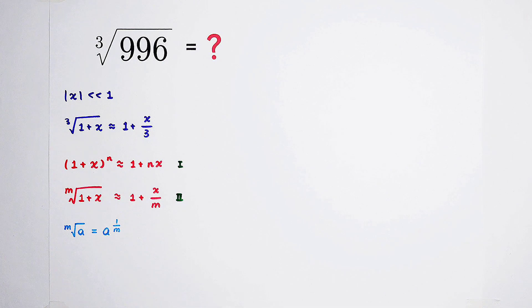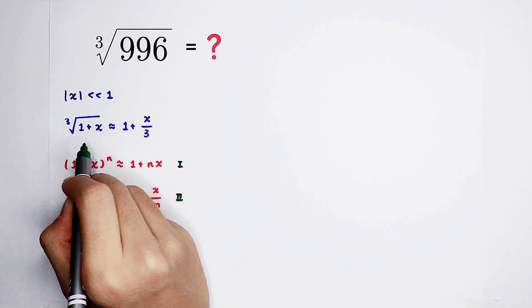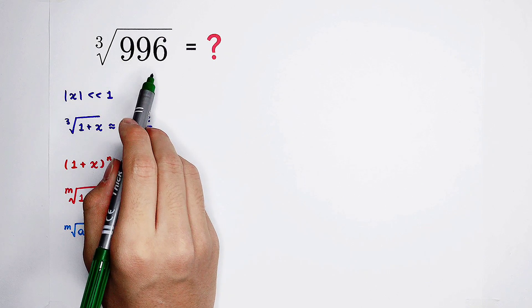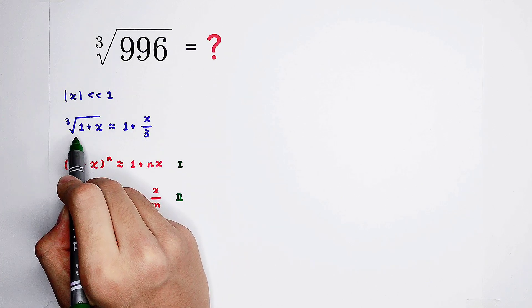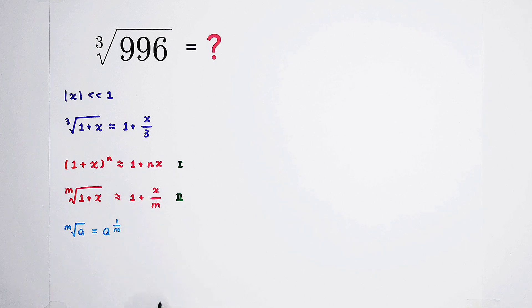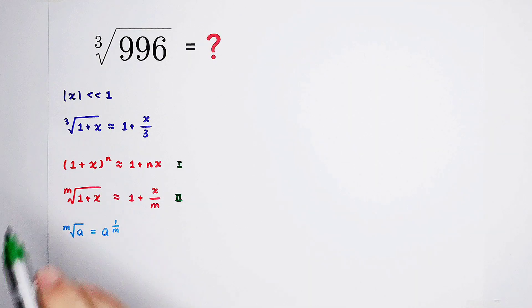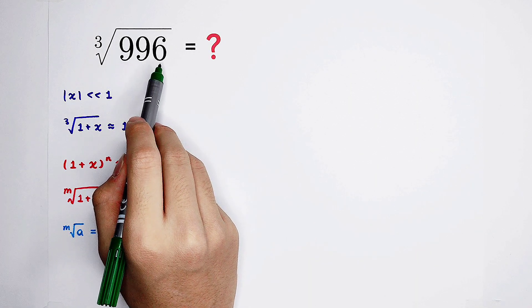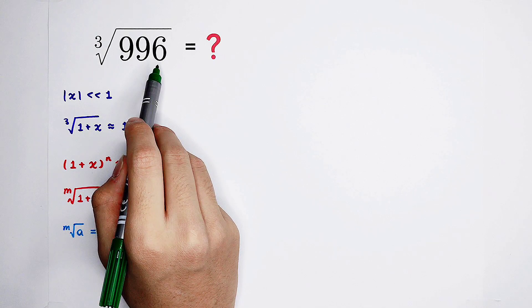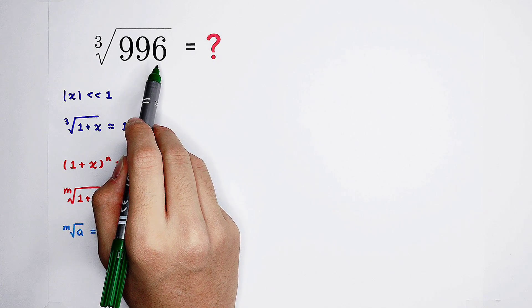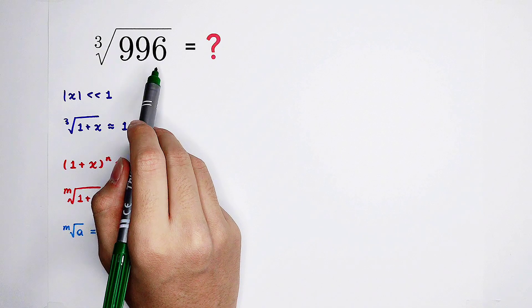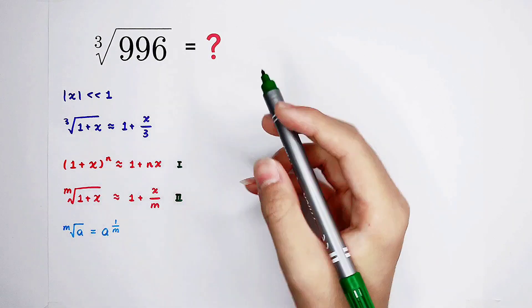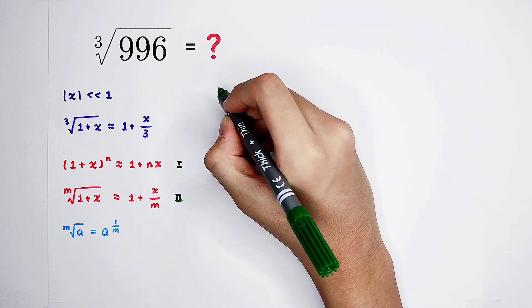We should firstly find x. However, there is a problem. Here is 996, we need a 1 here. Don't worry, do this. 996 is very close to 1,000. So, it can be written as 1,000 minus 4.